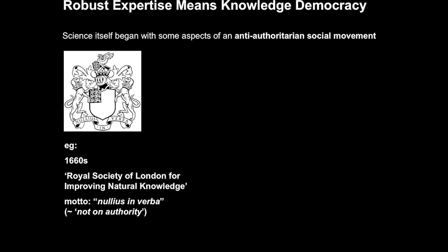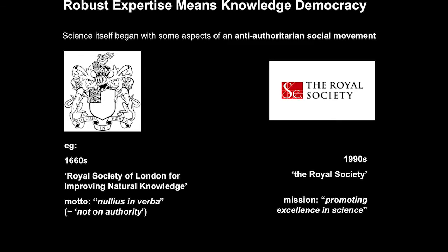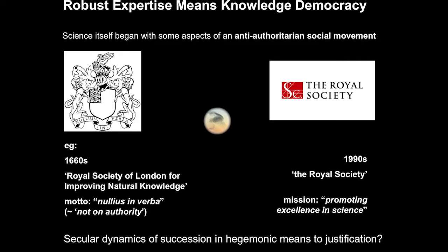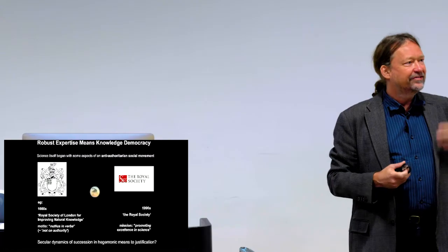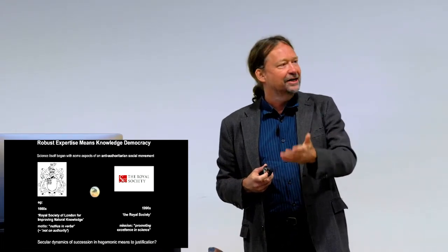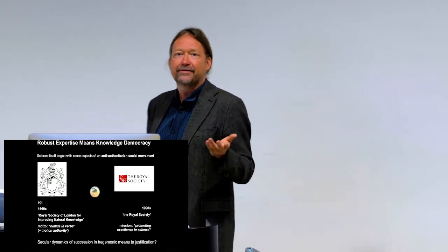To conclude, a frame in which we can see this crisis of expertise of both sides constituting each other might be informed by thinking back to the origins of science itself as an anti-authoritarian social movement. In the 1660s, the motto of the Royal Society was 'Nullius in verba'—not on authority—a motto that interestingly disappeared as the logo, as the epithet, in more recent years when the motto became 'excellence in science.' I think we can see a kind of secular dynamics of succession where these dynamics of justification operate over many generations, and science over those generations moves from one side to the other side just through processes of institutionalization and entrenchment. That's maybe what we're facing rather than more immediate things to do with authoritarian populism on their own.